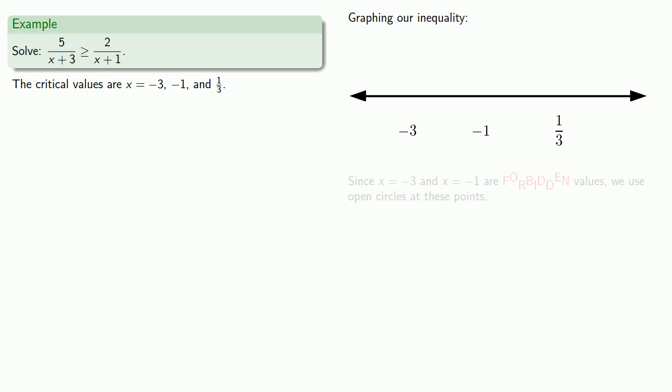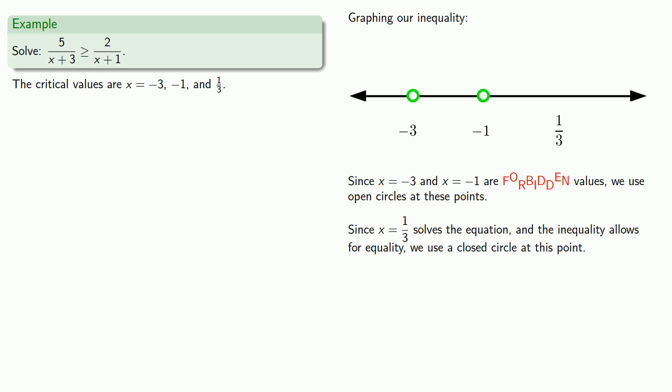Since x equals negative 3 and x equals negative 1 are forbidden values, we are not allowed to include them in our solution set, and so we use open circles at these points. Meanwhile, since x equals 1 third actually solves the equation, and the inequality allows for equality, we'll use a closed circle at x equals 1 third.